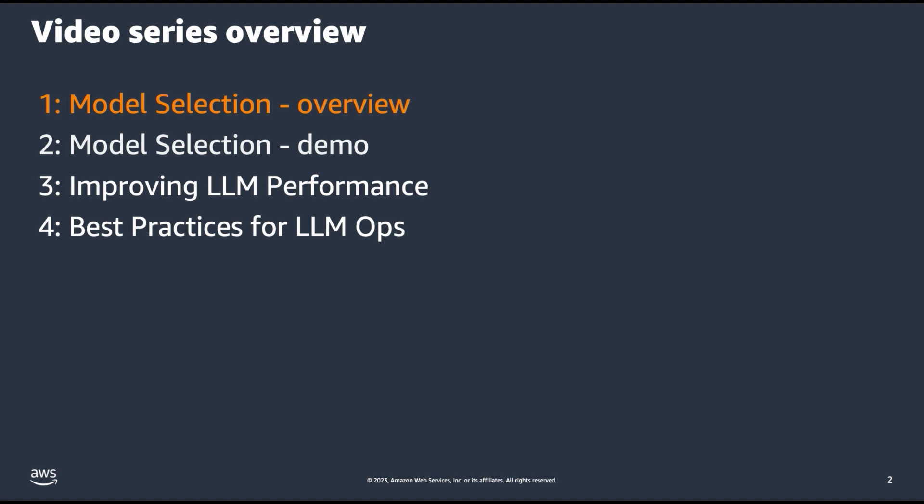This is the first video in a four-video series. In this video, we will provide an overview of model selection and how to choose the right large language model for your use case. In video two, we will show a demo of model selection. In video three, we will show how to improve the performance of your large language model once it has been chosen. And finally, in video four, we will review best practices for large language model operations and how to deploy and monitor your large language model in production.